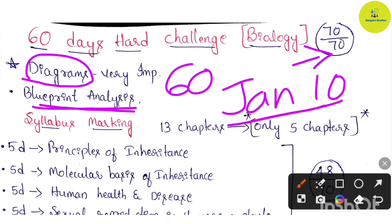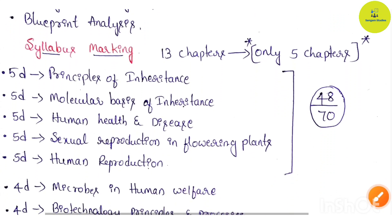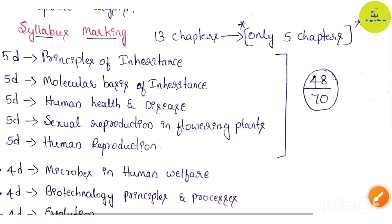Starting with January, in 60 days you will cover the entire biology syllabus, as well as physics and chemistry. You will cover all six subjects within the 60-day challenge. Let's talk about biology — it has a total of 13 chapters.